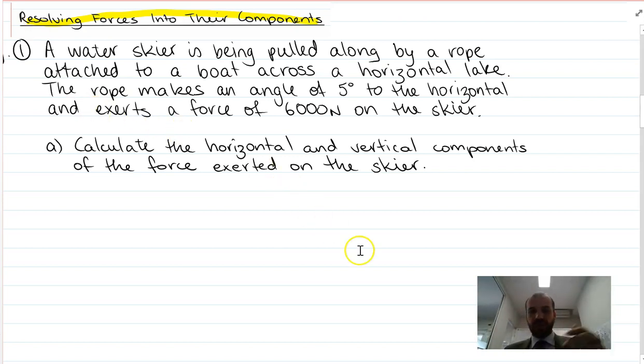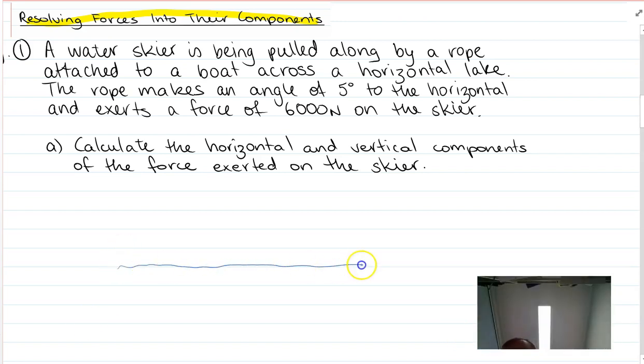Read the question and then I'm going to draw a picture. You should probably pause it and try drawing the picture yourself. It's picture drawing time. Here's some water and a boat, here's my boat. Now a person over here is skiing on the water, and it says that the rope makes an angle of 5 degrees to the horizontal.